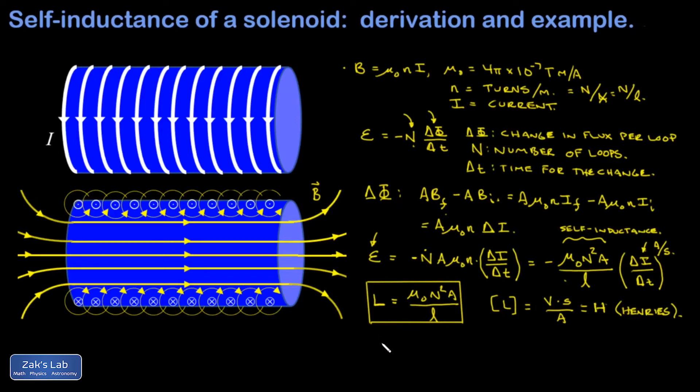Finally, I can rework my induced EMF formula. If I just talk about magnitudes and ignore the minus sign, which tells us that the induced EMF always resists the change in flux, the induced EMF is given by the inductance L times the rate of change in the current.